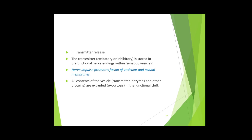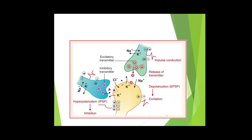The second step is transmitter release. Once there is conduction of an impulse at the presynaptic nerve terminal, the neurotransmitter synthesized inside the presynaptic terminal gets released. These transmitters can be excitatory or inhibitory and are stored in presynaptic synaptic vesicles within the prejunctional nerve endings, as visible in this diagram.